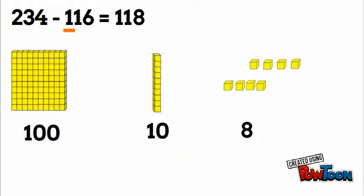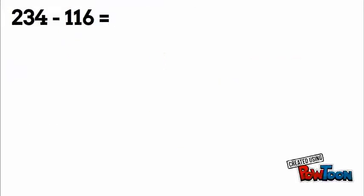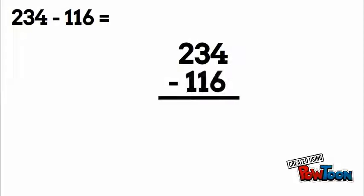Let's take a look at what that would look like doing the vertical written method. Make sure we line up by place values. Start with the ones - we have four minus six. Now four is not enough, so we have to borrow from our tens. Take one away and add ten to our ones, which gives us 14. Now we can subtract: 14 minus six is eight, two minus one is one, and two minus one gives us 118.